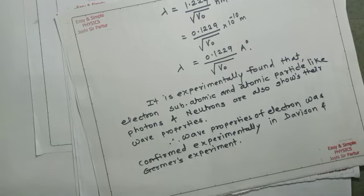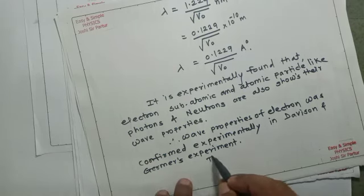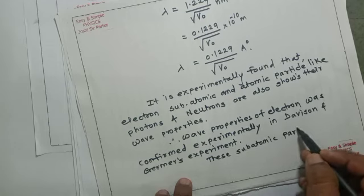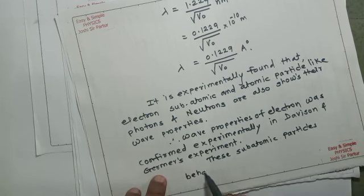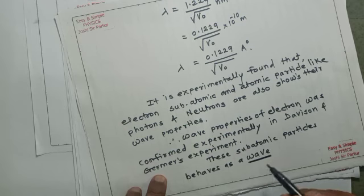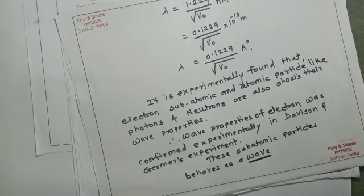Later on, de Broglie's hypothesis was extended: subatomic particles behave as waves. While photoelectric emission shows the particle nature of radiation, the Davisson-Germer experiment confirms wave nature. In the next video we will see the wave-particle duality of matter in more detail.